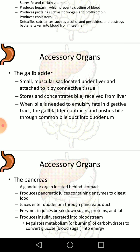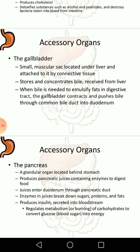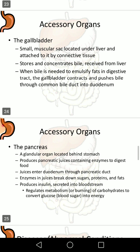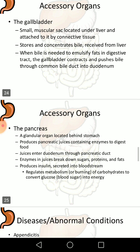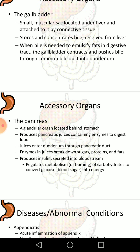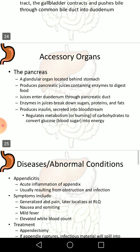The gallbladder is a small muscular sac located in the liver and attached to it via connective tissue. It stores and concentrates bile received from the liver. When bile is needed to emulsify fats in the digestive tract, the gallbladder contracts and pushes bile through the common bile duct into the duodenum.